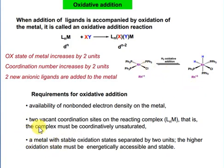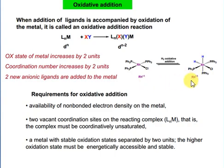The second condition is that there should be two vacant coordination sites on the central metal atom so it can coordinate two more ligands. The third condition is that the central metal atom should have two stable oxidation states separated by two — for example, rhodium (+1 and +3), or iron (+2 and +4), both stable and separated by two.